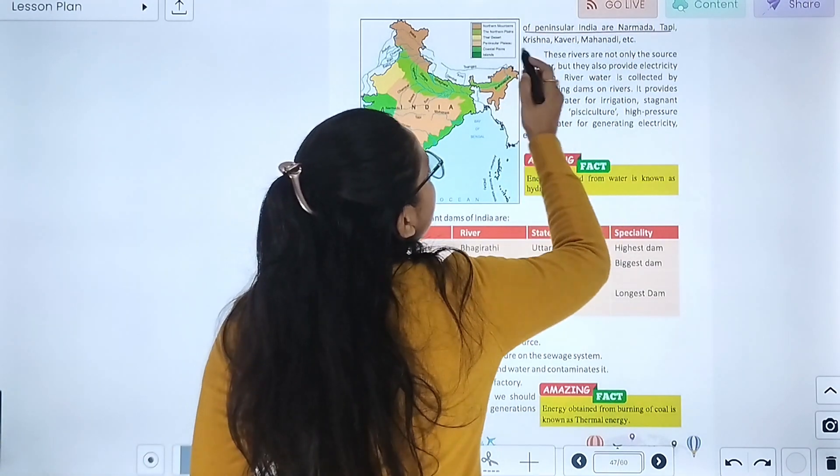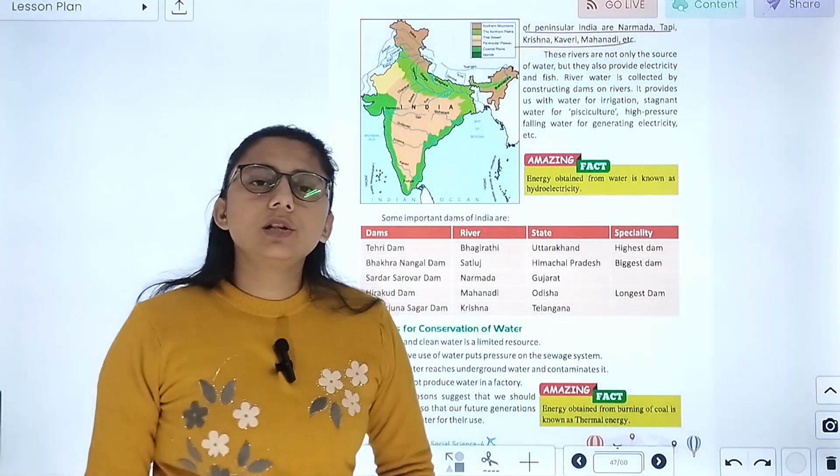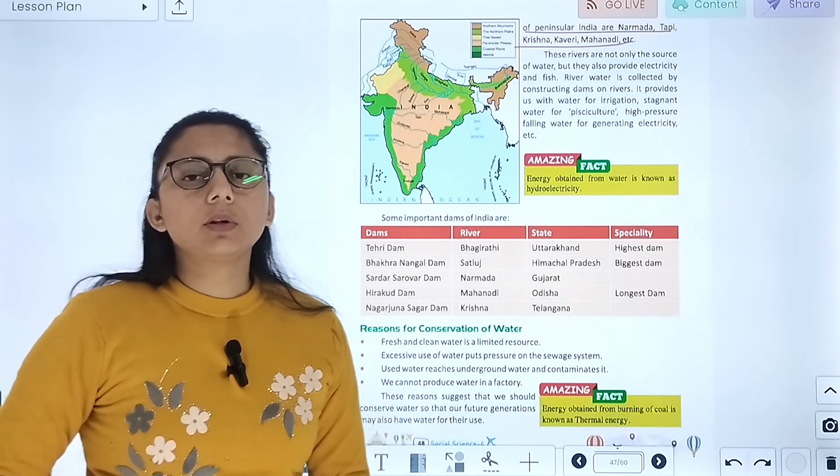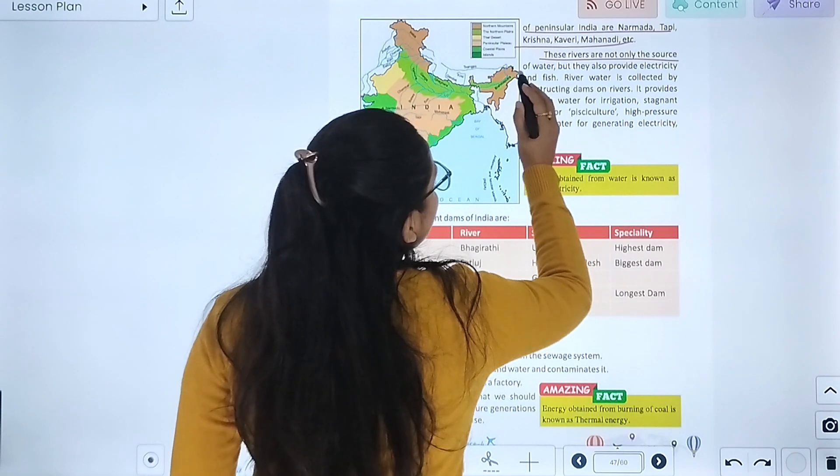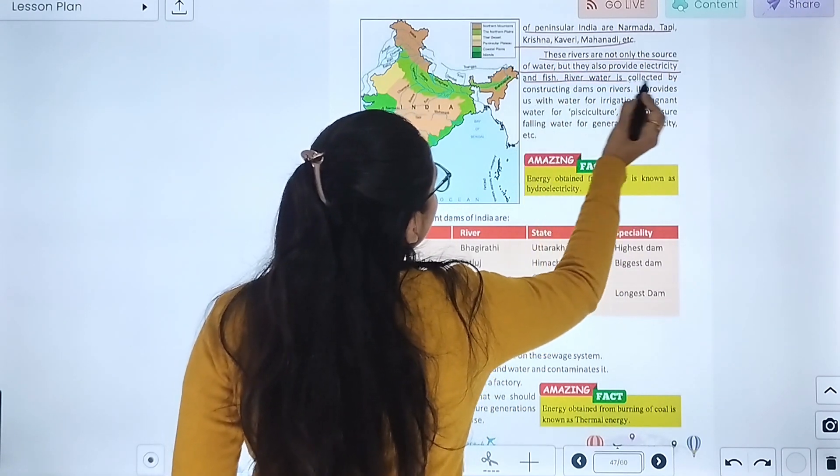Some important Peninsular rivers are Narmada, Tapi, Krishna, Kaveri and Mahanadi. These are seasonal rivers. These rivers are not only the source of water, but they also provide electricity and fish.